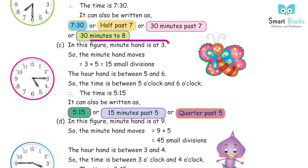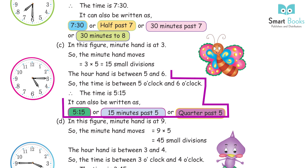C: In this figure, the minute hand is at 3. So the minute hand has moved 3 × 5 = 15 small divisions. The hour hand is between 5 and 6. So the time is between 5 o'clock and 6 o'clock. The time is 5:15. It can also be written as 5:15, 15 minutes past 5, or quarter past 5.